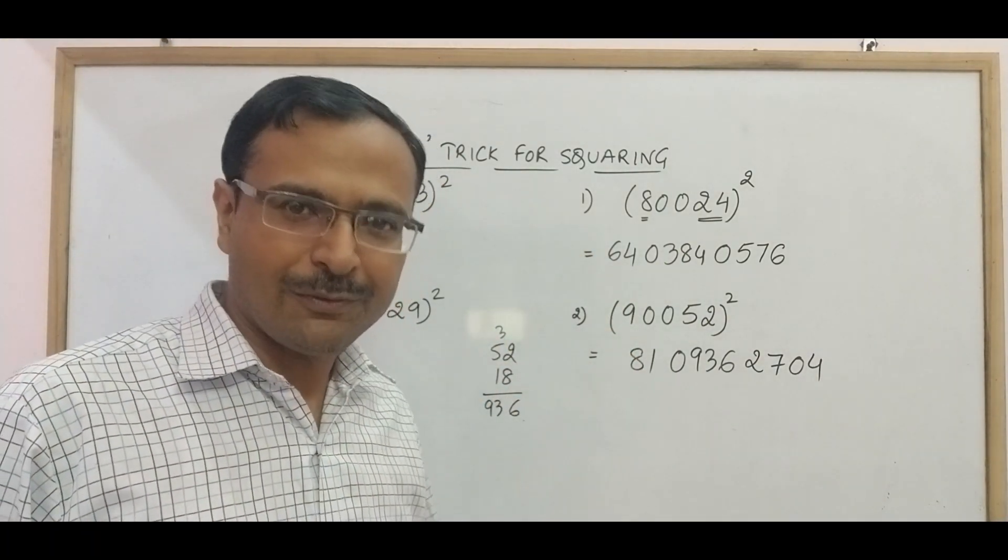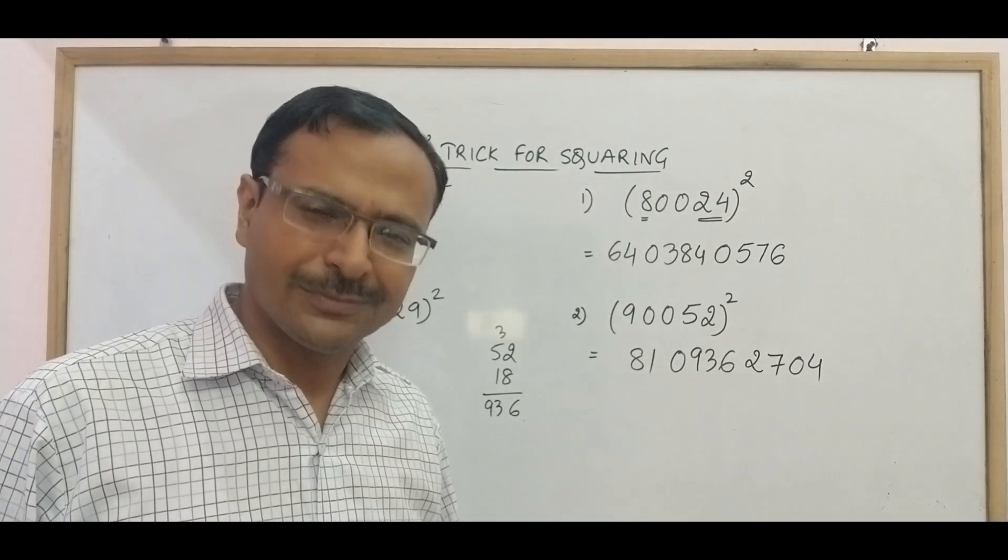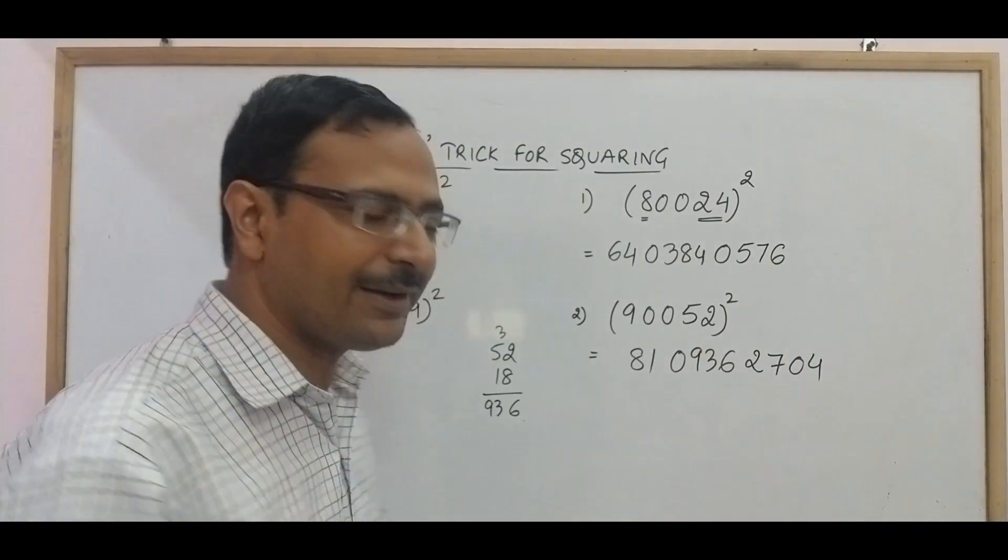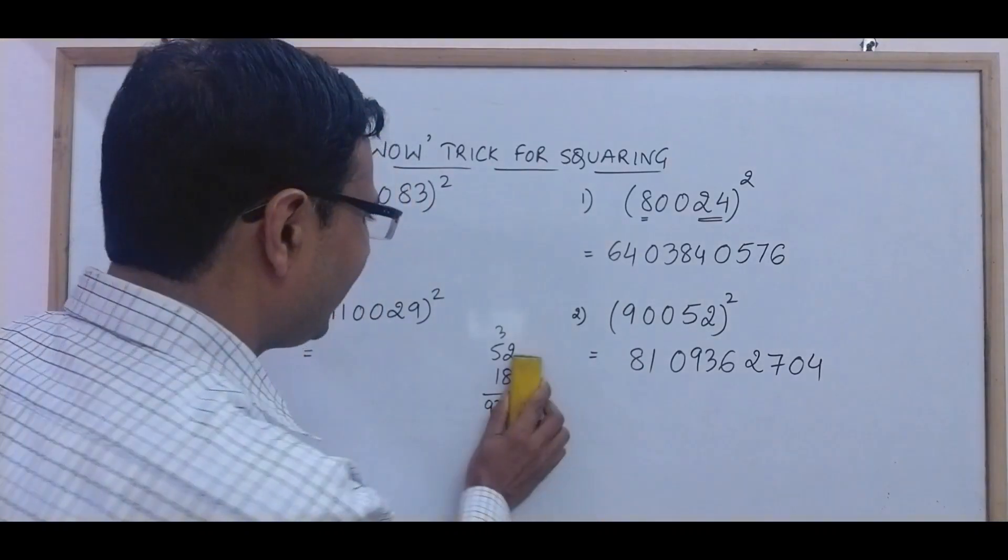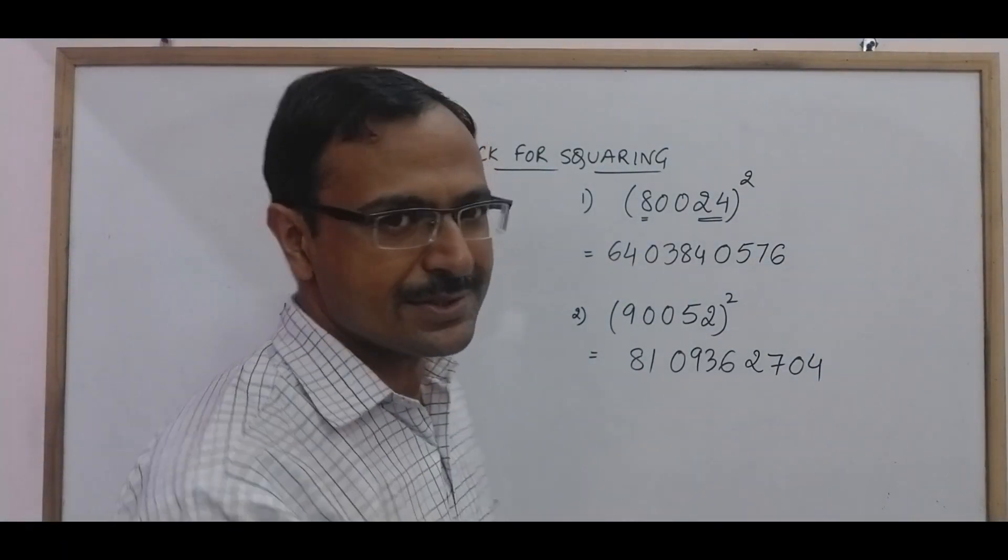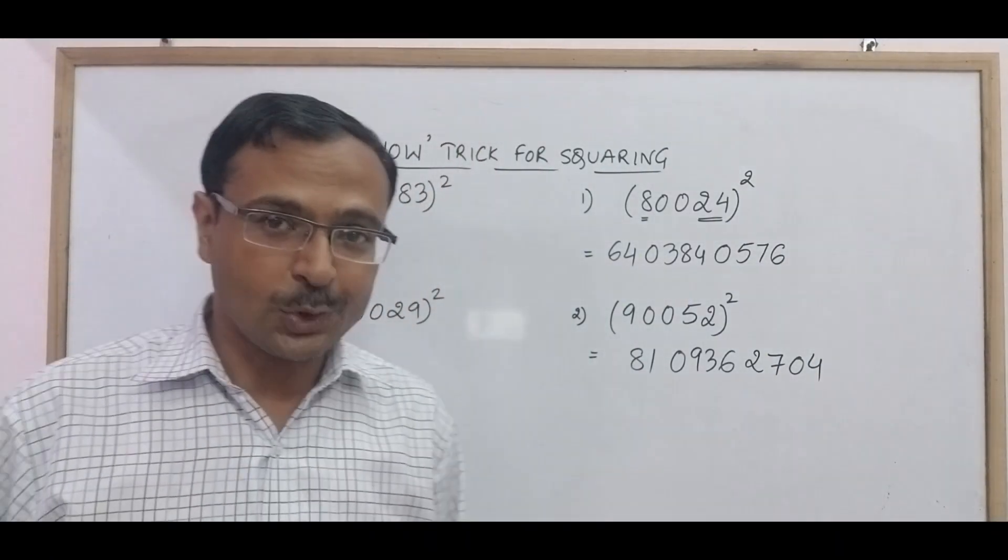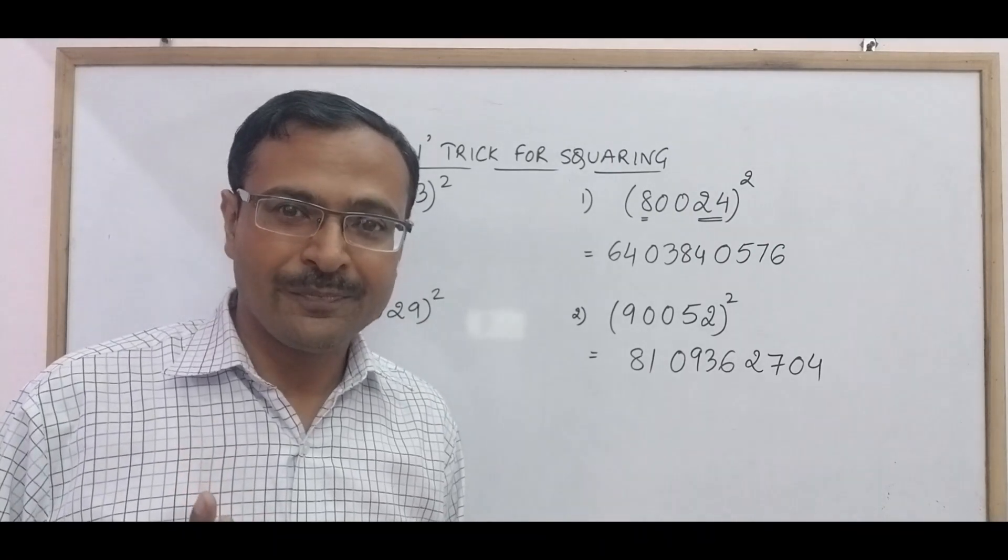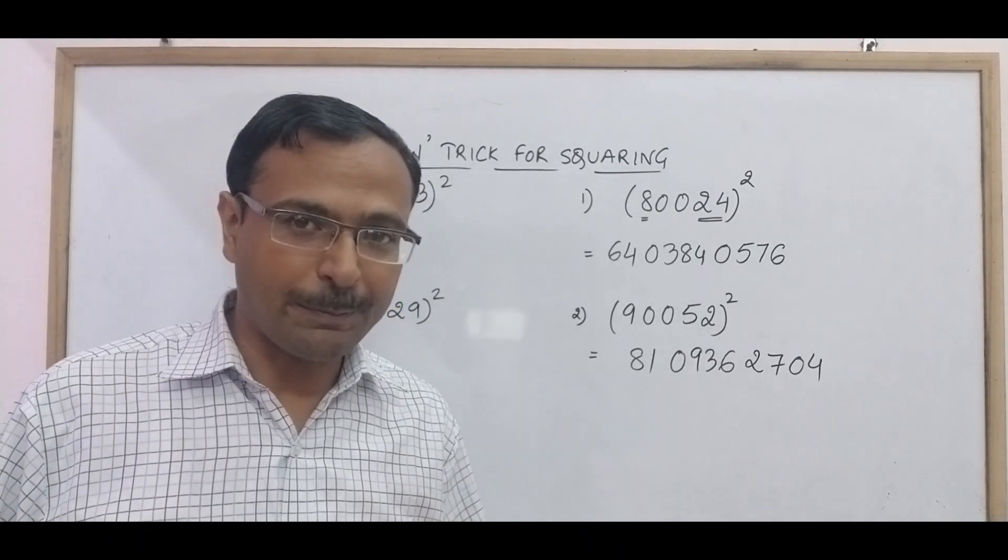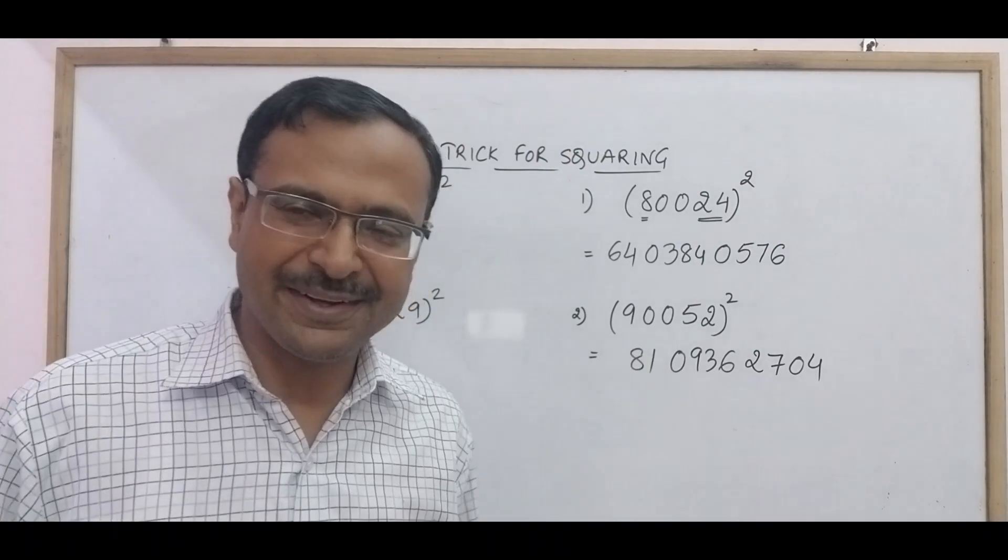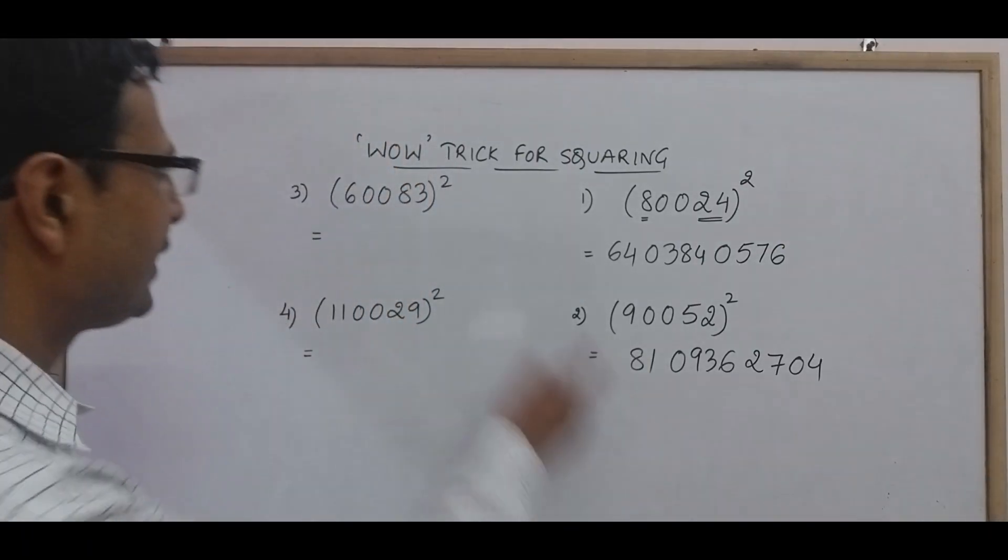So 8109362704 is the square of 90052, pick up your calculators and try whether this answer is correct or not. I am sure you are going to get it correct every time. And let's have one or two more questions. See, I will apply this on a six digit number also now. I am doing it randomly. I am not prepared for this. So let's see whether I am successful or not.